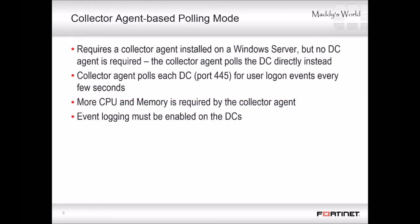How else can we inform FortiGate when an Active Directory user authenticates or logs off? Let's look at polling mode. This can be either collector agent-based or agentless. In the collector agent-based polling mode, like DC agent mode, this requires a collector agent installed on a Windows server. However, it doesn't require DC agents installed on each DC. So it is convenient for many DCs and can also be used where you cannot install a DC agent. But the trade-off is that the server with the collector agent must be much more powerful, and it will also generate unnecessary traffic when there have been no login events.